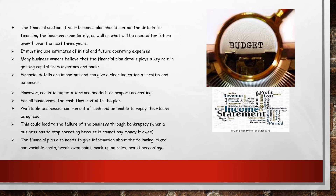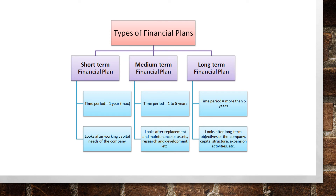The financial plan also needs to give information about fixed and variable costs, break-even point, markup on sales, and profit percentage. Types of financial plans: short-term covers a period of one year and looks after working capital needs; medium-term covers one to five years and looks after replacement and maintenance of assets, research and development; long-term covers more than five years and looks after long-term objectives, capital structure, and expansion activities.